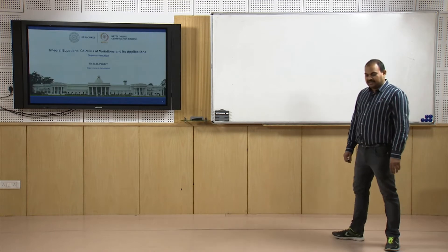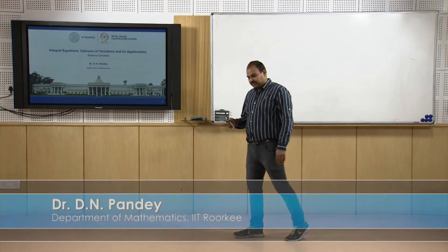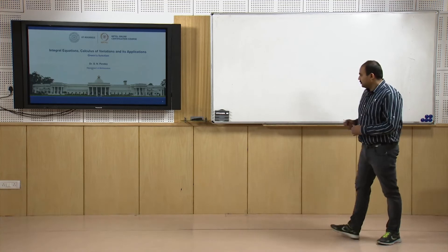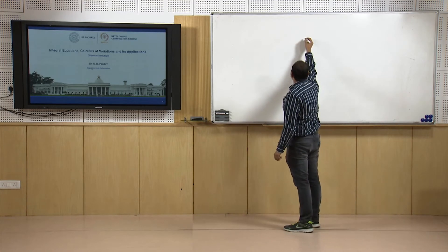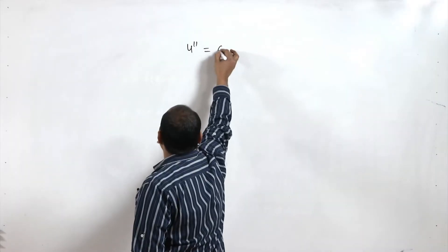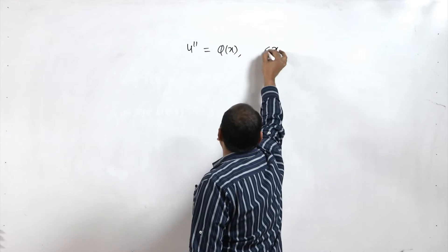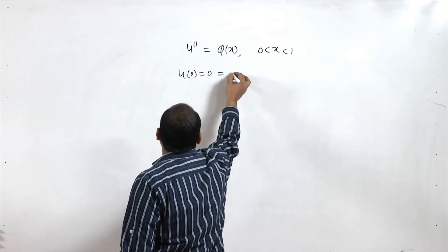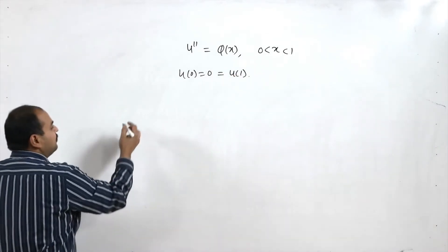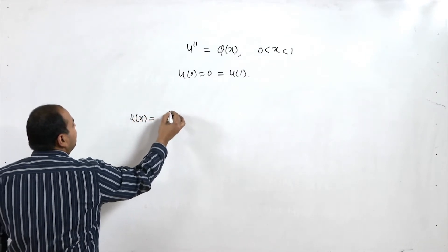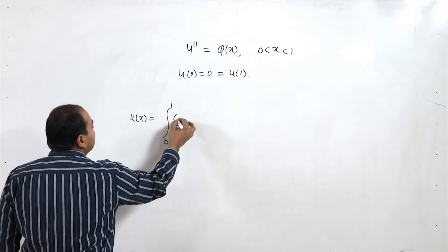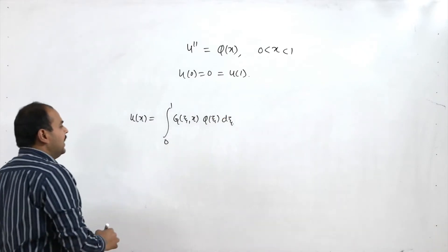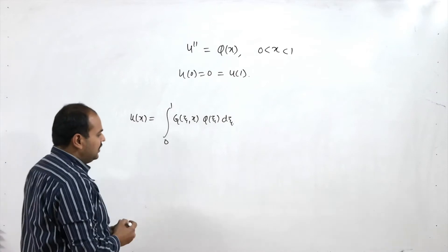Hello friends. In this lecture we are going to continue the previous talk on Green functions. In the previous lecture we discussed the problem u'' = φ(x), where x is between 0 to 1, and u(0) = 0 and u(1) = 0. We found the solution u(x) in the integral form ∫g(ξ,x)φ(ξ)dξ, where g(ξ,x) was defined earlier.